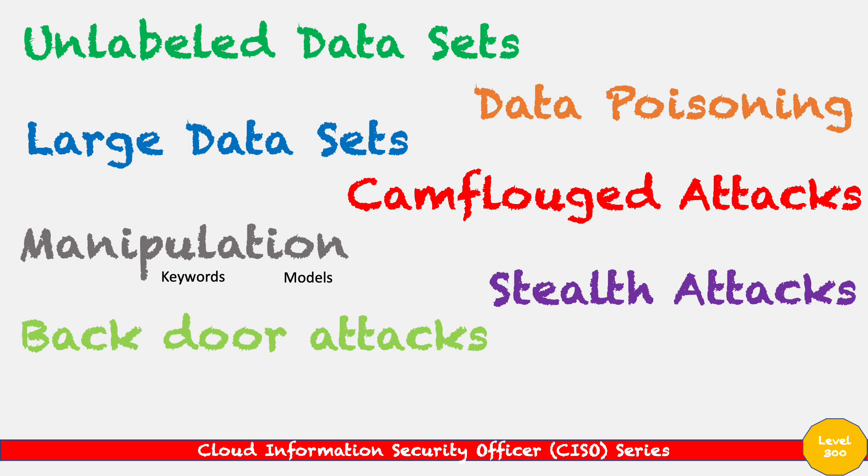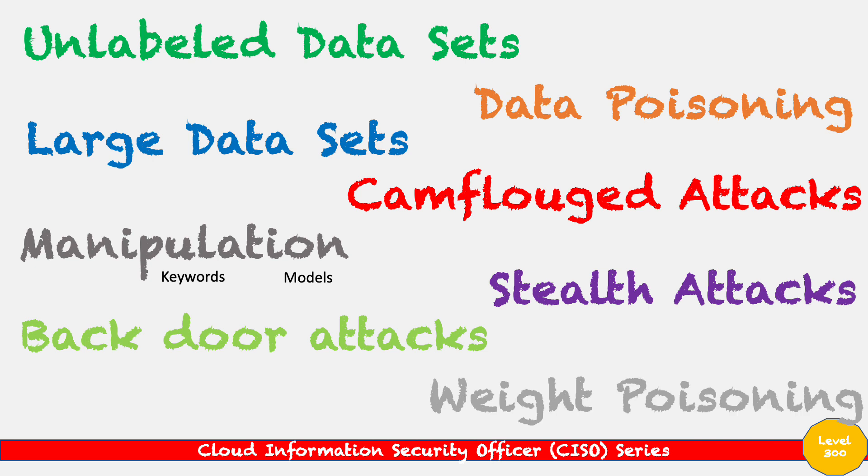Another aspect of stealth on the theme of data involves the large volumes of datasets used to train models. Most of these datasets can be unlabeled, and we can actually label those datasets the way we want them. That's another way of poisoning large language models — focusing on unlabeled data and labeling it the way we want.